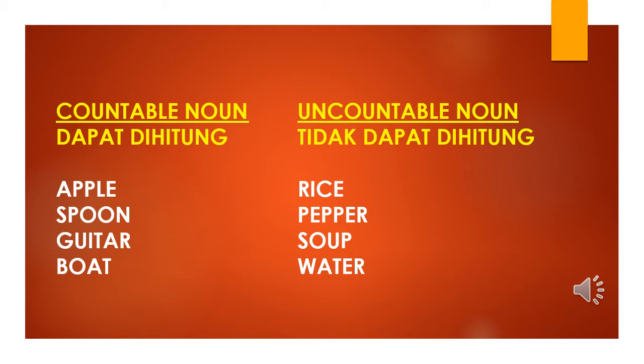For a countable noun, for example: apple, spoon, guitar, boat - we can count all these nouns. For the uncountable nouns, they are rice, pepper, soup, and water. We cannot count all these objects. We cannot count the rice.